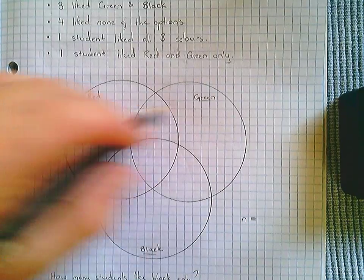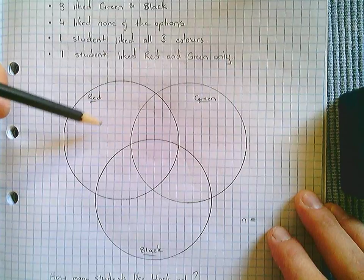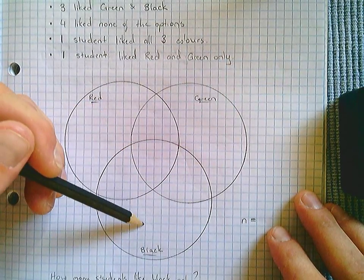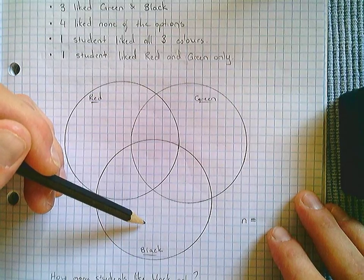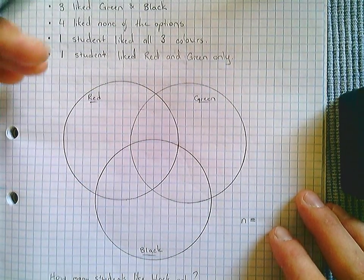Once we've got this done, red only is represented by those students up here, green only by those students here, and black only by those students down here. Once we've filled in our Venn diagram, we can quickly answer these questions.